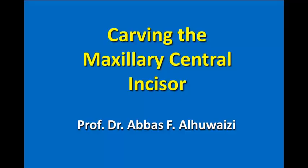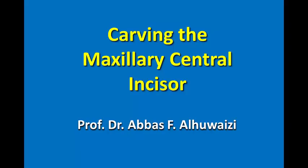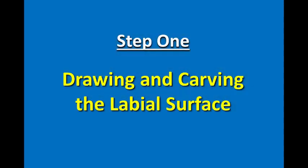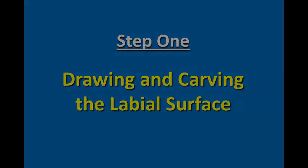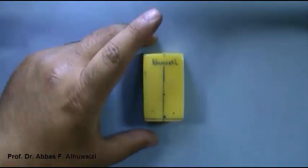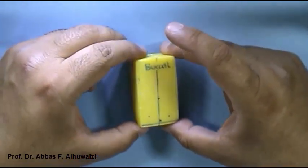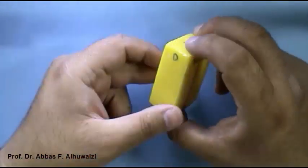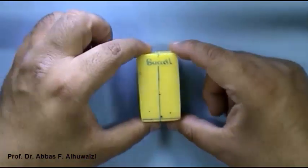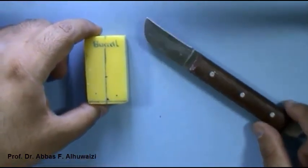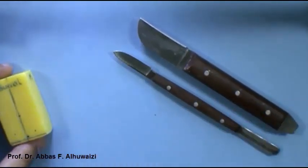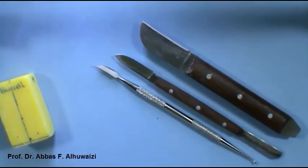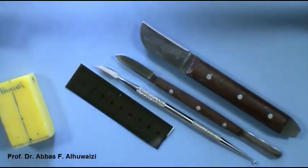Carving the maxillary central incisor. Step 1: Drawing and carving the labial surface. First, we prepare a block of wax or soap in specific dimensions. Then we prepare the plaster knife, wax knife, lacron cover, ruler, and a marking pen.